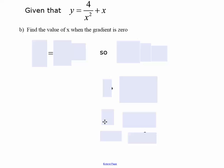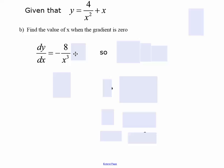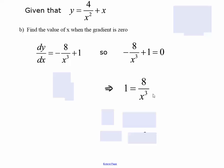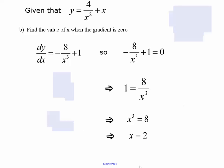In the next example, given y equals 4 over x squared plus x, we need to find the value of x when the gradient is 0. Writing 4 over x squared as 4x to the minus 2, the gradient function is dy/dx equals minus 8x to the minus 3, or minus 8 over x cubed, plus 1. Setting that equal to 0: minus 8 over x cubed plus 1 equals 0, so 1 equals 8 over x cubed, meaning x cubed equals 8. Taking the cube root gives x equals 2.